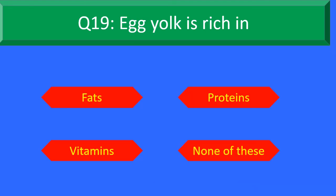Question number 19. Egg yolk is rich in — Option A: Fats, Option B: Proteins, Option C: Vitamins, and Option D: None of these. Your time starts now.